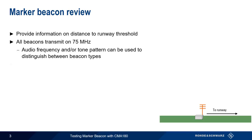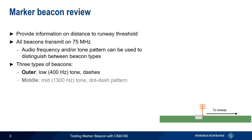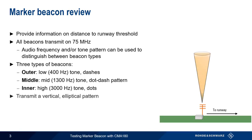There are three types of beacons: outer, middle, and inner. The names refer to their relative distances from the runway threshold. Remember that marker beacons transmit in a vertical elliptical pattern, so their signals are only received or heard when an aircraft is passing almost directly over them.